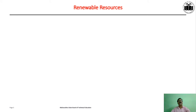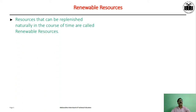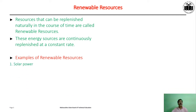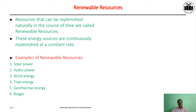Now we will discuss renewable resources in detail. Resources that can be replenished naturally in the course of time are called renewable resources. These energy resources are continuously replenished at a constant rate. Examples of renewable resources are solar power from the sun, hydropower from flowing water, wind energy due to wind, tidal energy due to tide, geothermal energy due to hot springs, and biogas due to biomass.